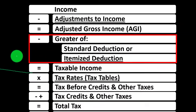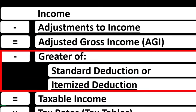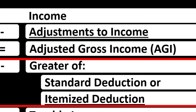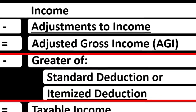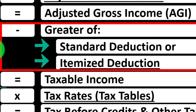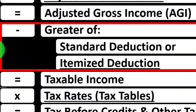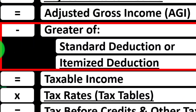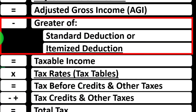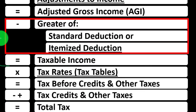We want to keep distinct the adjustments up top — which you can also think of as above-the-line deductions — from the items down below. With the standard deduction and itemized deduction down below, we have to look at the relationship between them so we can understand what is going to happen with regards to the tax return and provide some tax planning.